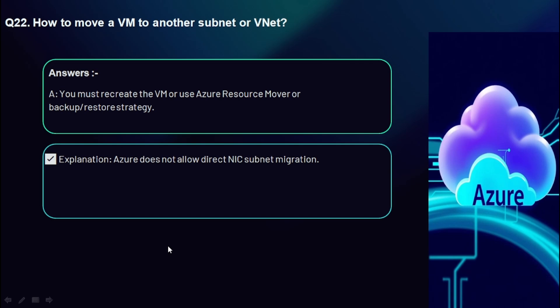Question 22: How do you move a VM to another subnet or VNet? You must recreate the VM, or use Azure Resource Mover or a backup/restore strategy. Azure does not support changing the VNet of an existing NIC directly. You can only move within subnets of the same VNet — if it's another VNet, you must recreate the VM with a new NIC attached to the target VNet.